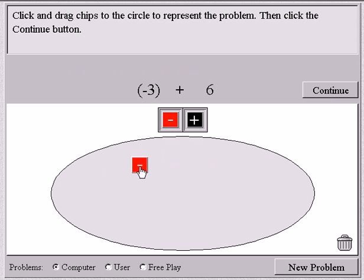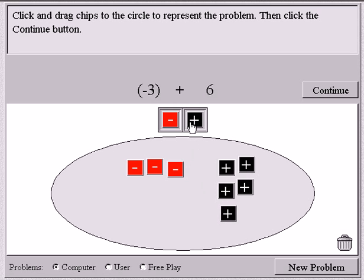Okay, so this problem says negative 3, so I need 1, 2, 3 negatives. And this problem says 6, positive 6. So I'm going to say 1, 2, 3, 4, 5, 6.